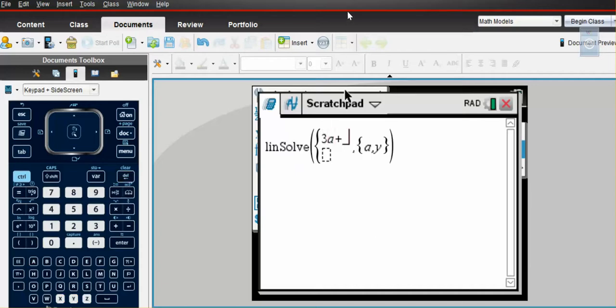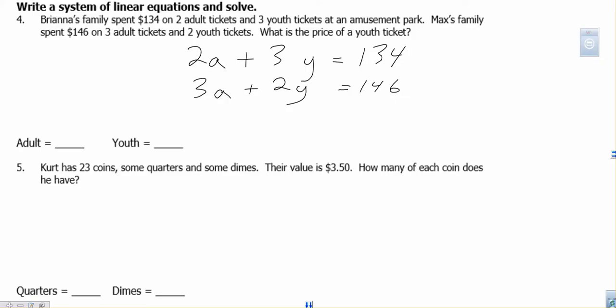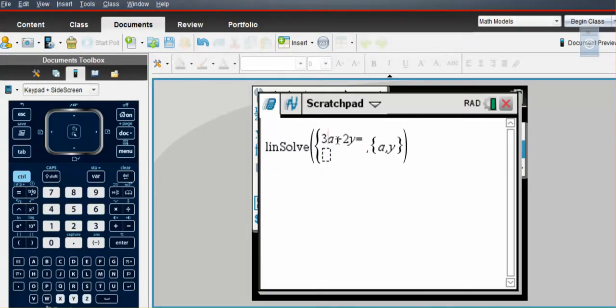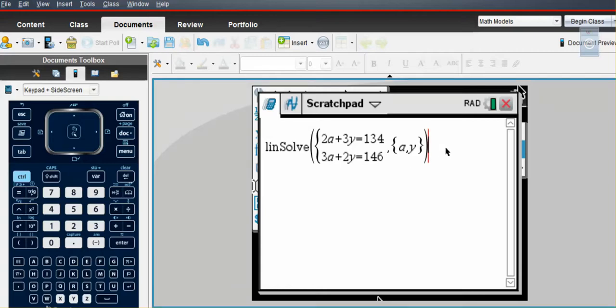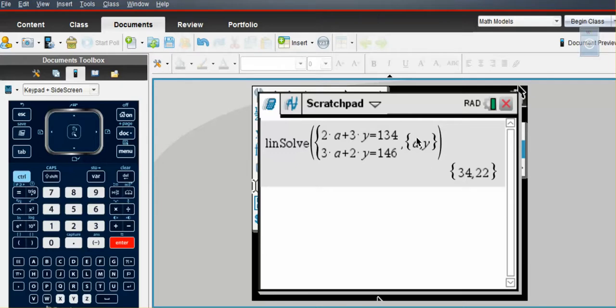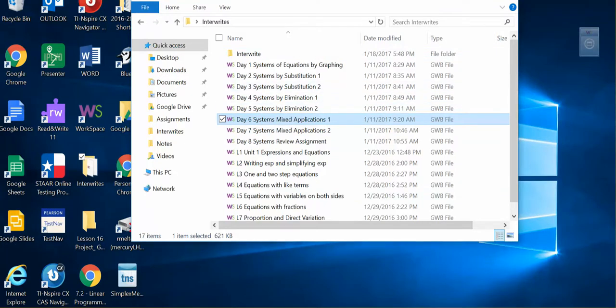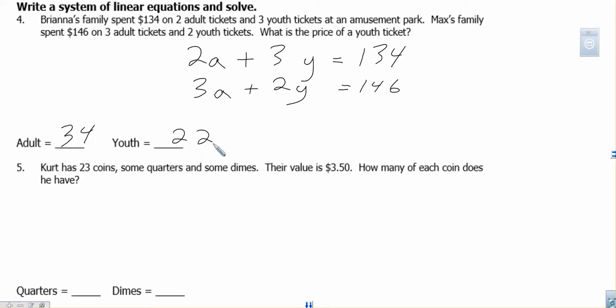So let's see. So we're going to type literally our equations in there. We have 2A plus 3Y equals 134, and this one is going to be 146. And it's 3A plus 2Y. 3A plus 2Y equals 146. And at that point we can hit enter, and it will tell us 34 comma 22. Now the order we typed them in matters, because this means that adult is 34 and youth is 22. So 34 and 22. And these are costs here.